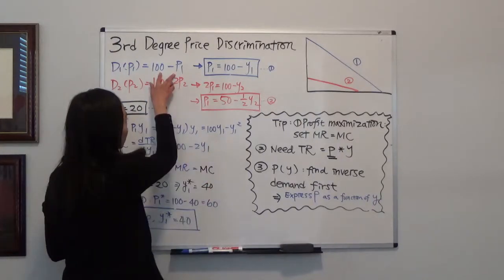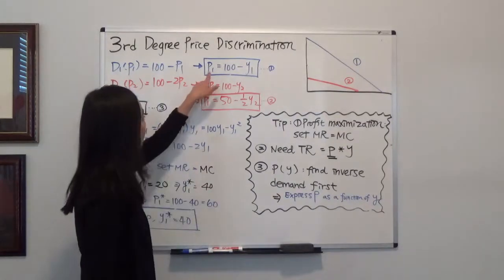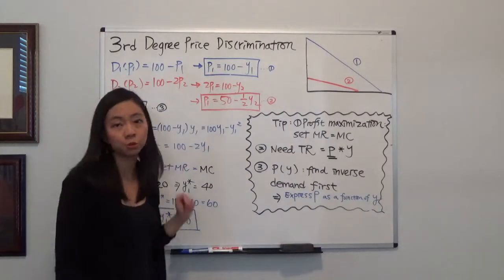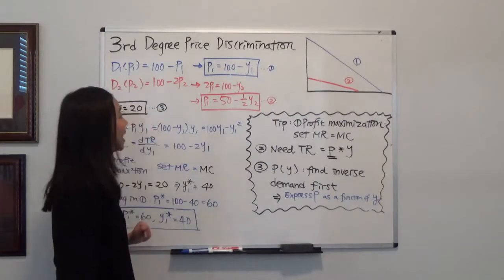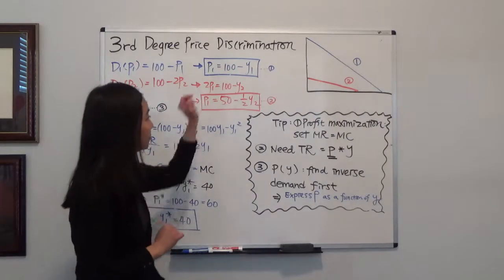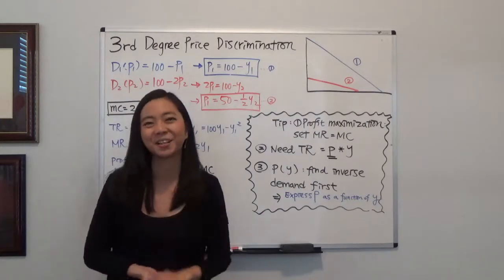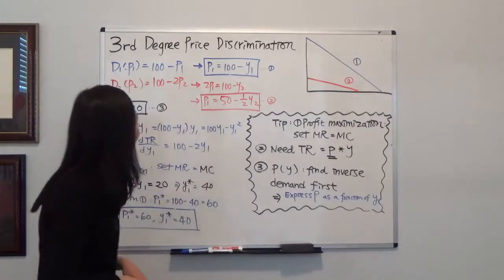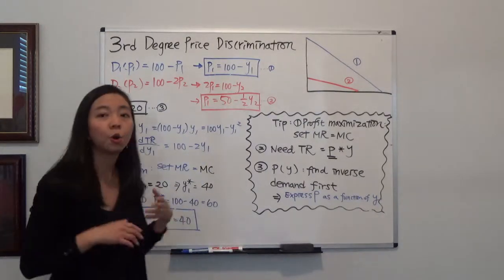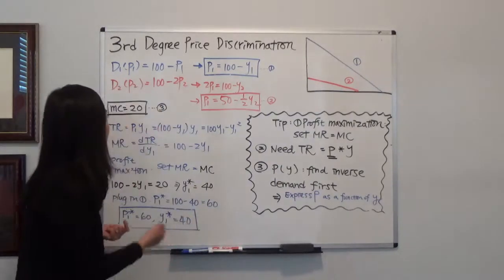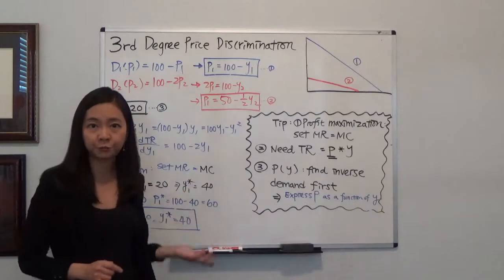We find the inverse demand function for the first market: P1 is equal to 100 minus quantity. I'm going to first solve the optimal quantity and price for the first market and leave the second market as a practice for you. We're also given that the marginal cost is equal to 20 and it's constant for this firm.